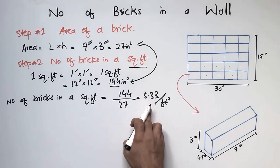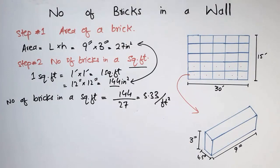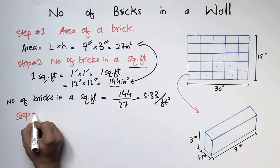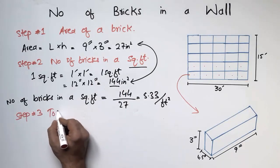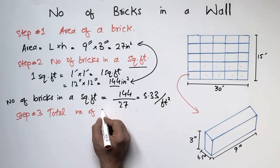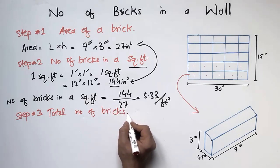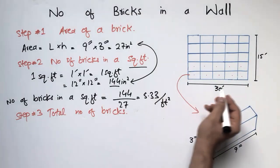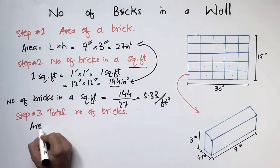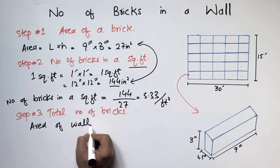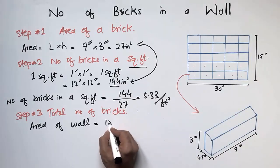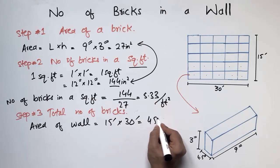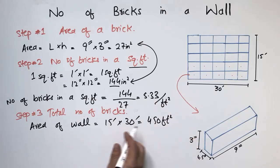The third step is to find the total number of bricks in the whole wall. To do this, we first find the area of the wall. The area of the wall is length multiplied by height, which is 15 feet times 30 feet, coming out to 450 square feet. This is the total area of the wall.